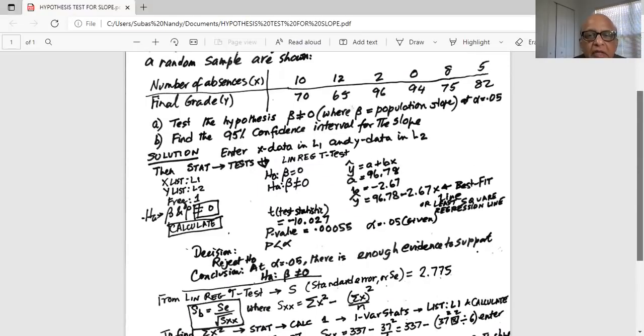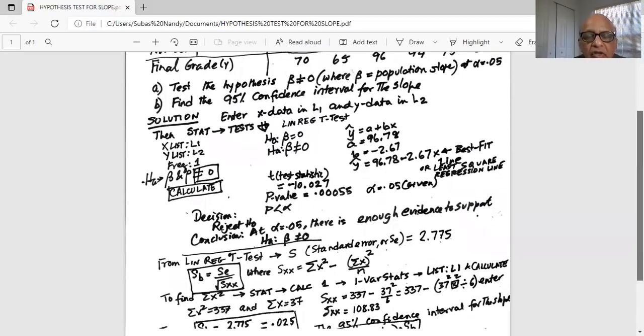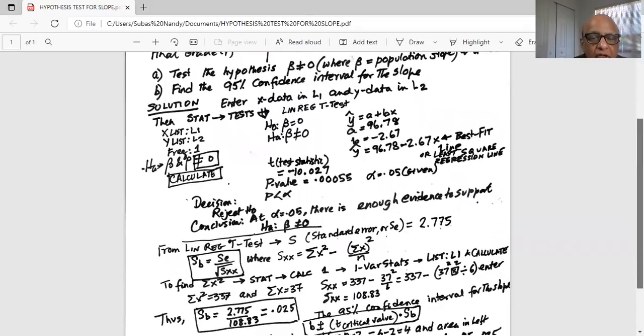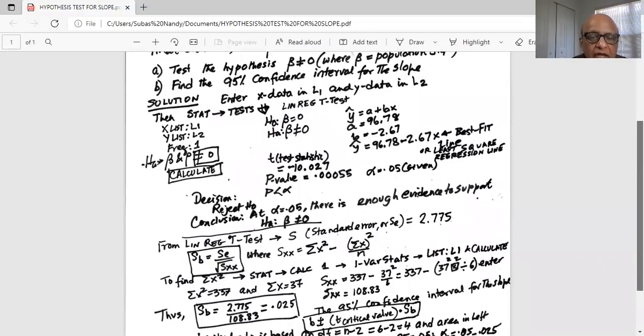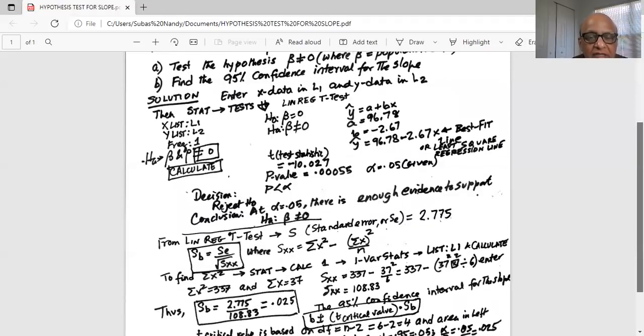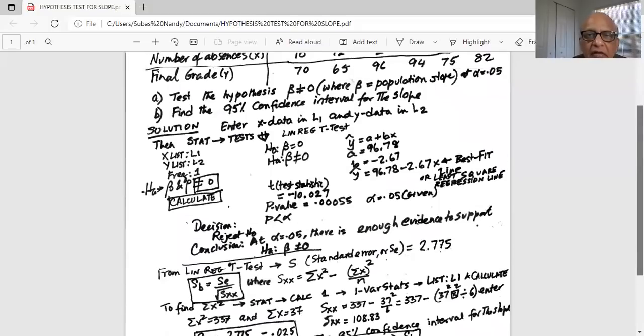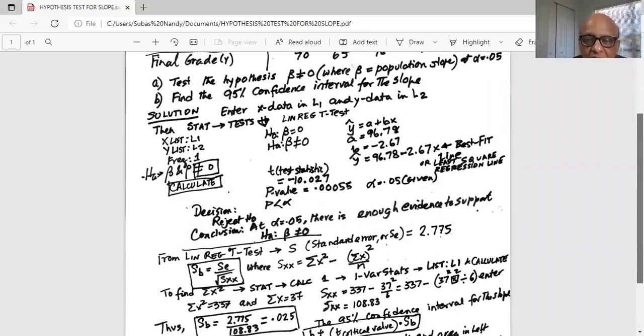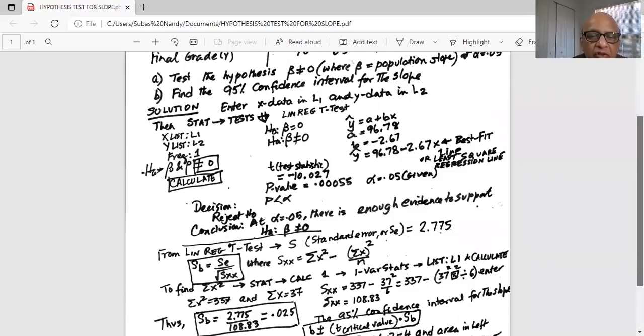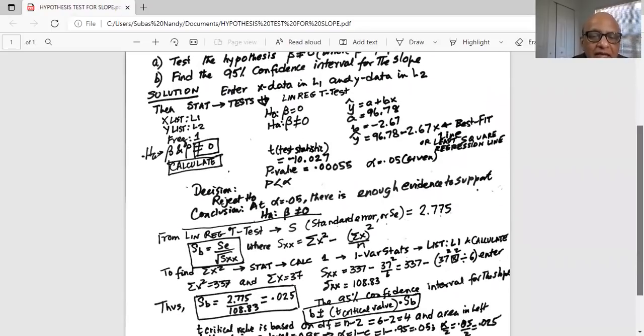Okay. So now we want to calculate the 95% confidence interval for the slope. The formula for SB is equal to SE divided by square root of SXX. What is SE? That is the standard deviation, estimated standard deviation of the error. And that comes in the calculator in the Linreg t-test. If you scroll down, you will see S. That value is shown on the calculator as 2.775. Now we need to find out SXX. And this is the formula for SXX,